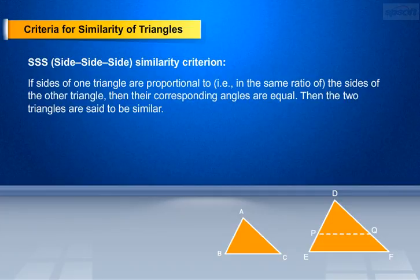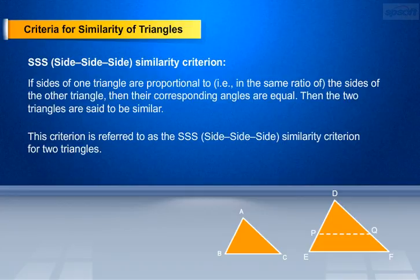If in two triangles, the sides of one triangle are in the same ratio as the sides of the other triangle, then their corresponding angles are equal and hence the two triangles are similar. This criterion is referred to as the SSS — Side-Side-Side — similarity criterion for two triangles.